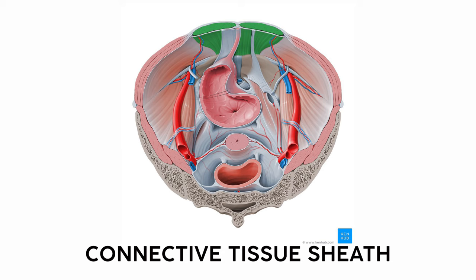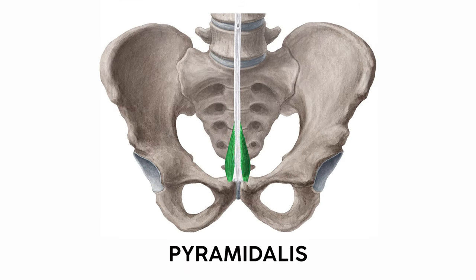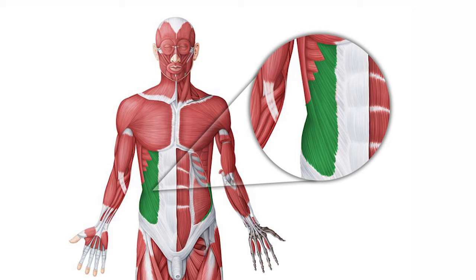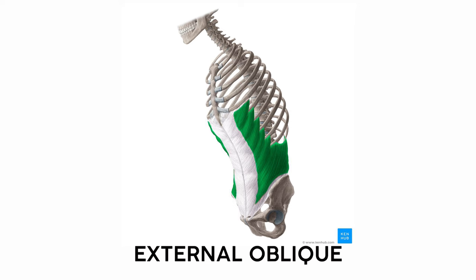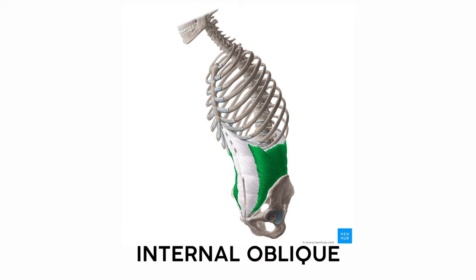The rectus abdominis is actually surrounded by a sheath of connective tissue, and there's another muscle in that sheath called the pyramidalis. It's triangle-shaped, attaching to the pubic symphysis and other parts of the pubic crest. If we peeled away the rectus abdominis, we'd find a layer of muscle that wraps all the way around the abdomen called the external oblique, and under that the internal oblique.